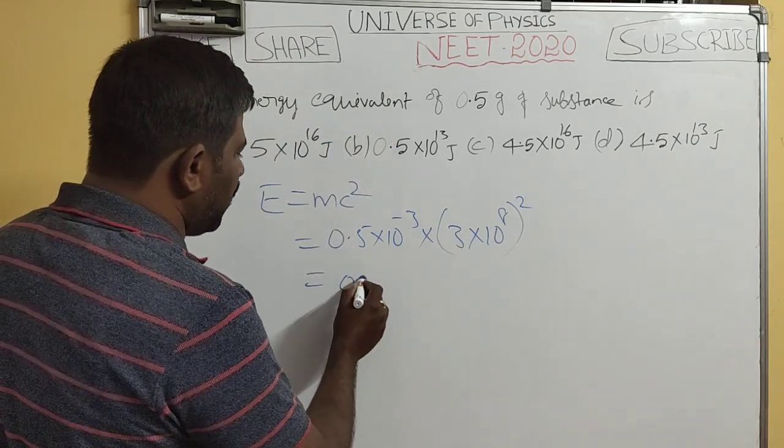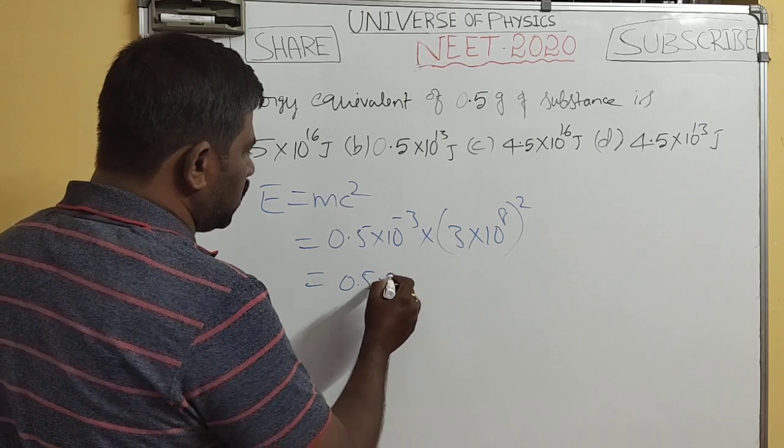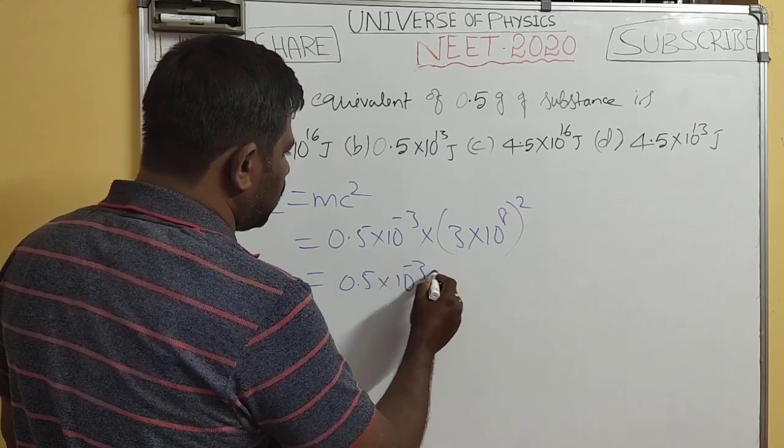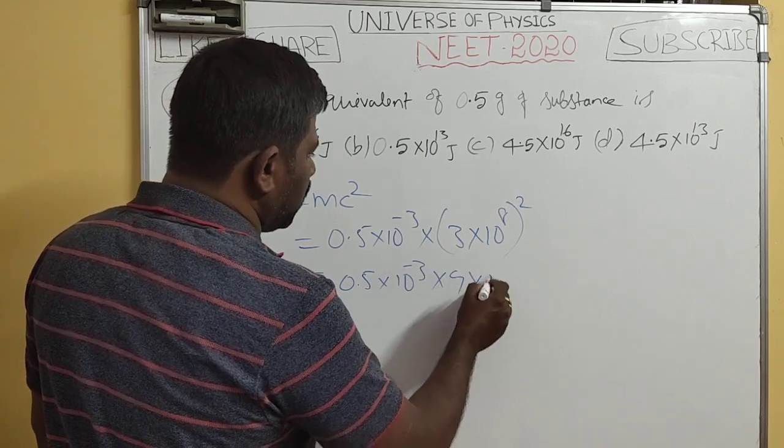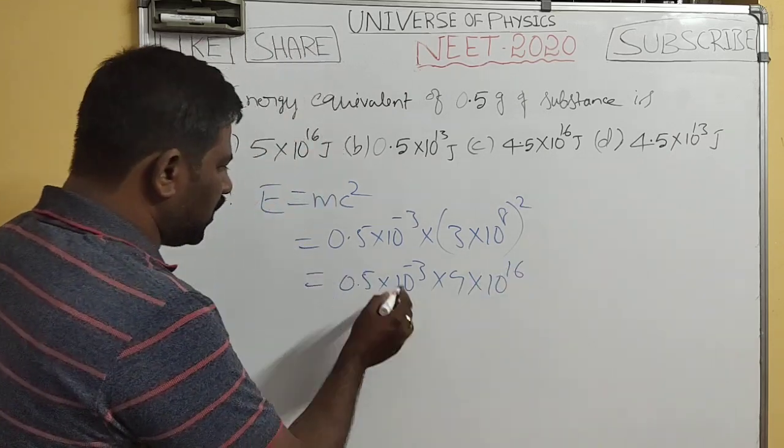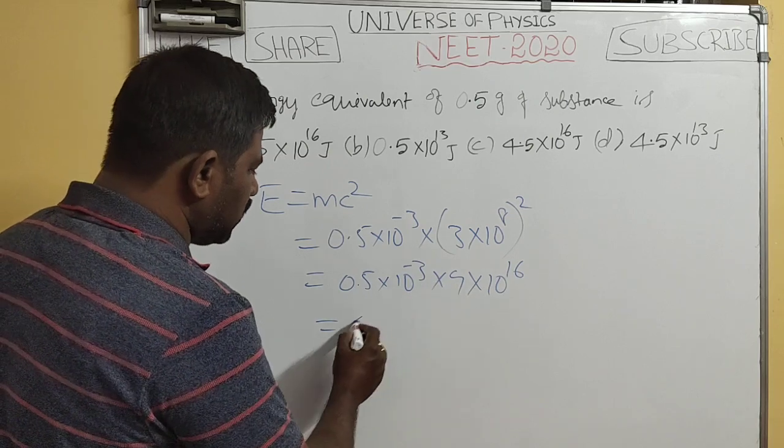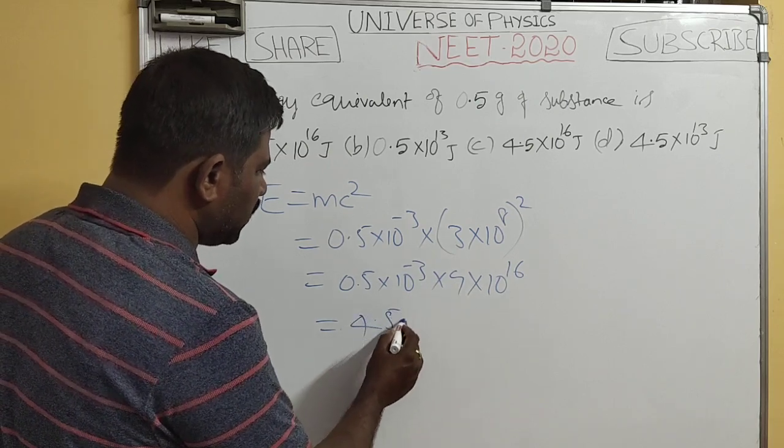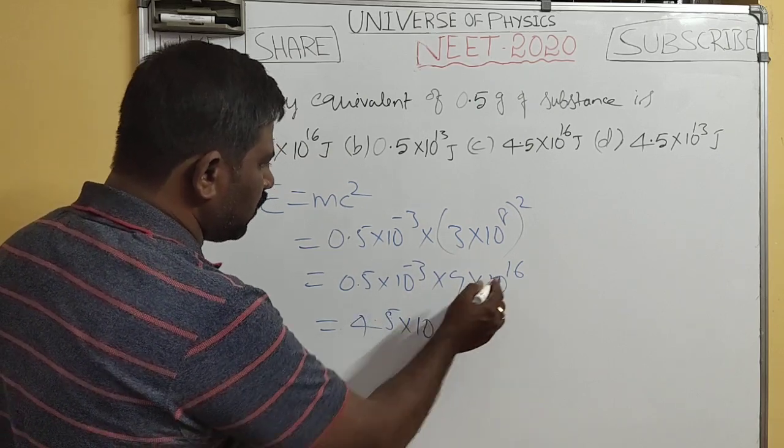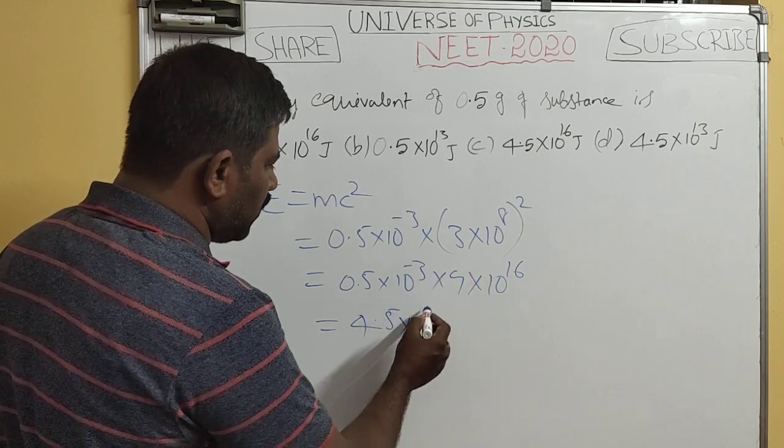This gives us 0.5×10^-3 × 9×10^16. Simplifying: 0.5×9 equals 4.5, and 10^16 × 10^-3 equals 10^13 joules.